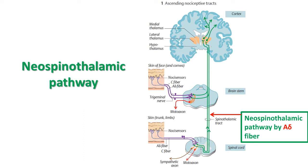Before ending in Rexed laminae 1 and 5, the first order neuron may go upward or downward a few segments and forms the tract of Lissauer. So the first order neuron ends in Rexed laminae 1 and 5.